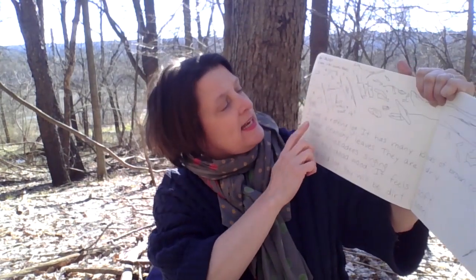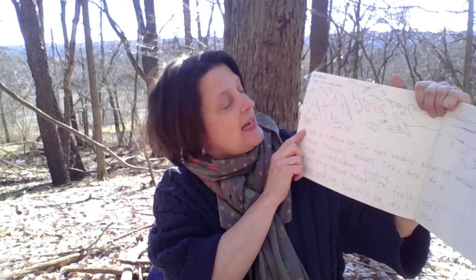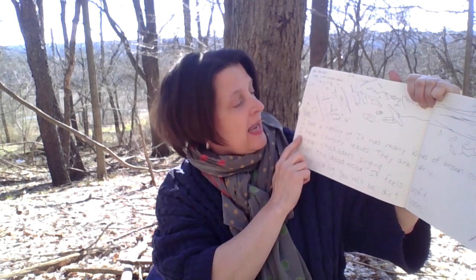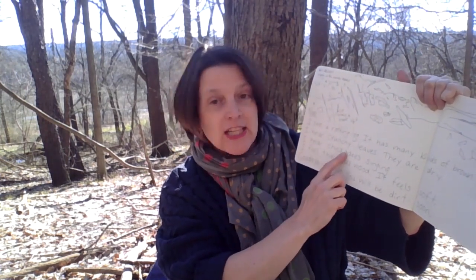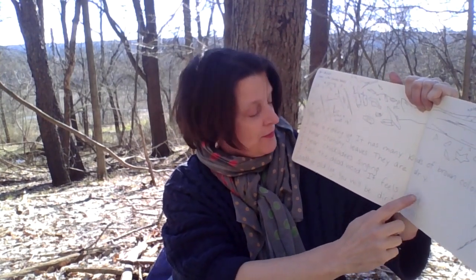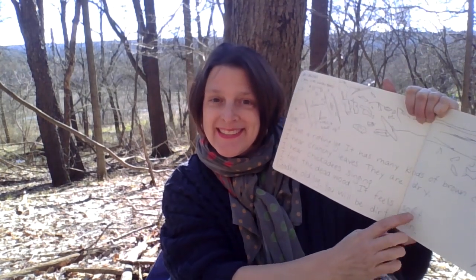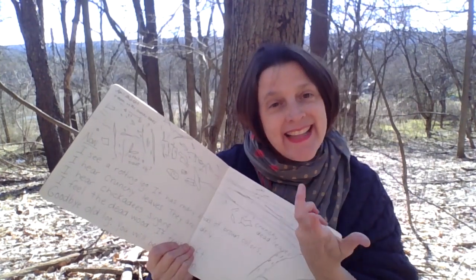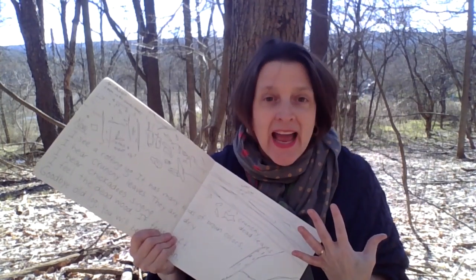Let me read this to you. I called it "Now" — usually I title a poem after I write it. I see a rotting log. It has many kinds of brown colors. I hear crunchy leaves. They are dry. I hear chickadees singing. I feel the dead wood. It feels soft. Goodbye, old log. You will be dirt soon. So I have my senses for the first lines, and then the last line is something different — maybe I'm talking to the object, or maybe I could think of a feeling that I have.